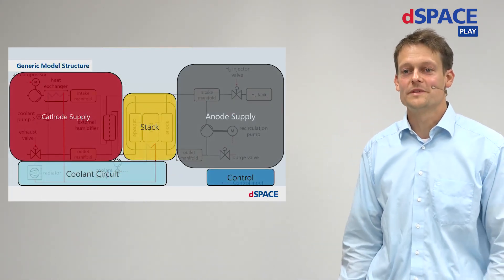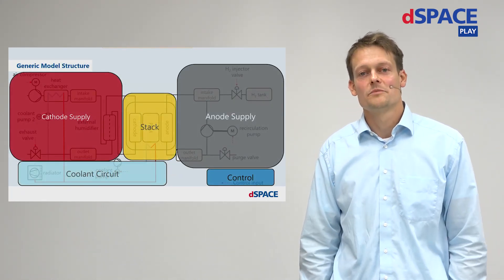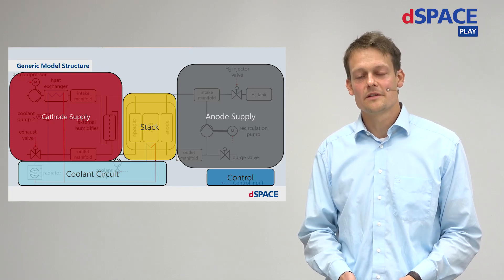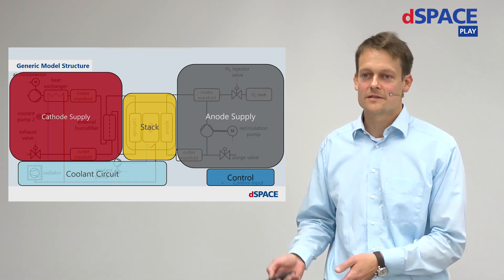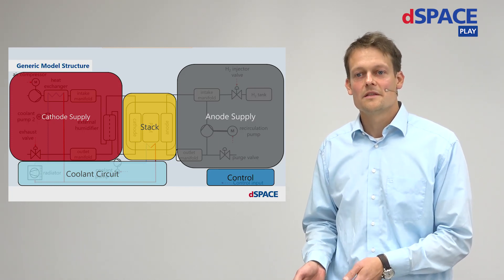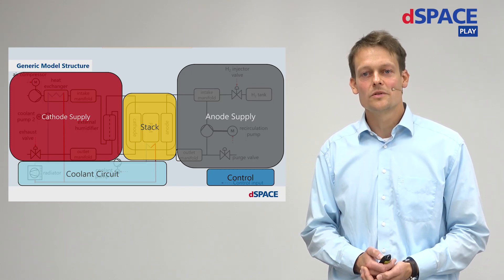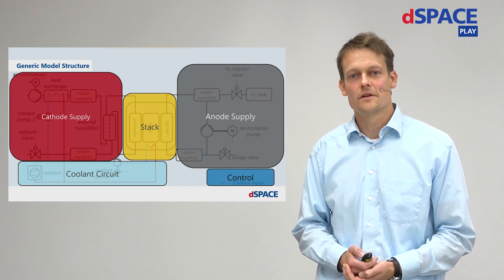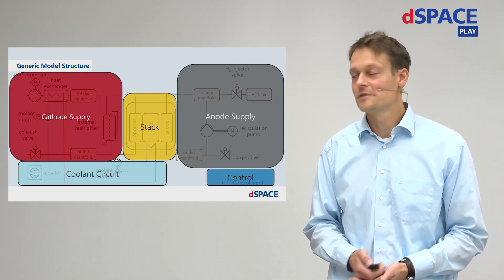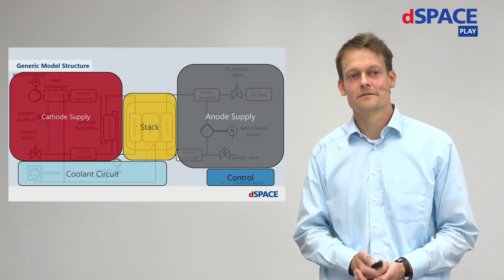Roughly speaking, we are differentiating between the hydrogen supply on the anode side, the air supply on the cathode side, the electrochemical reaction within the stack, and the cooling circuit for the thermal management. An example system structure can look like this.